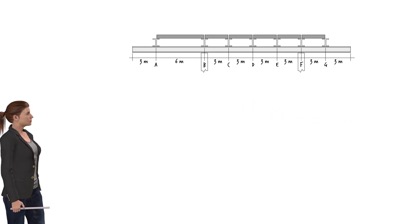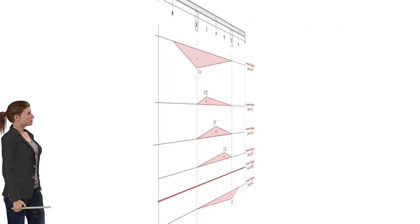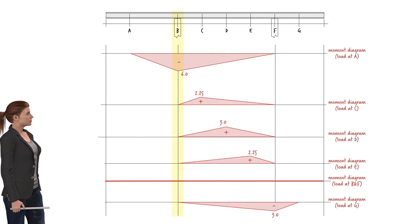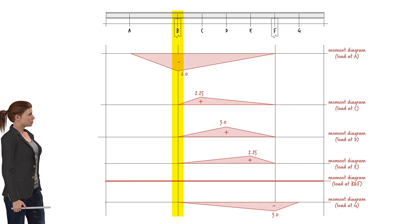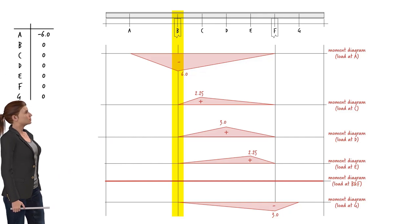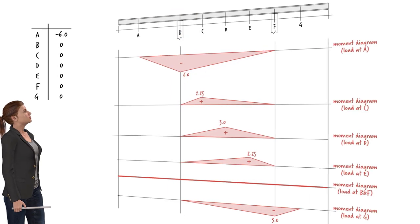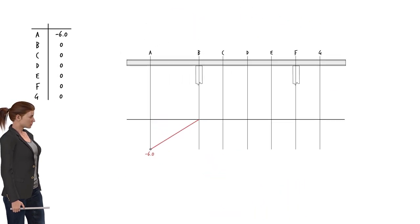We can construct moment influence lines in a similar manner. Suppose we wish to draw the influence line for moment at B. Upon examining the moment diagrams, we can see there is only one non-zero data point: a bending moment develops at point B only when the unit load is located at position A. For all other load positions, moment at B is zero. Plotting these points gives the influence line for moment at B.